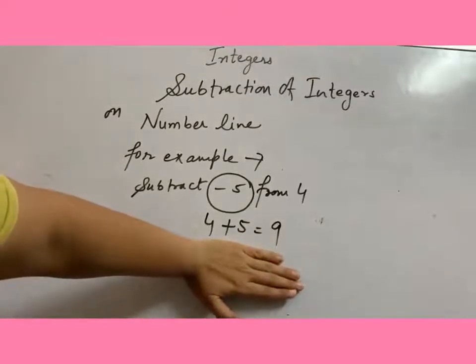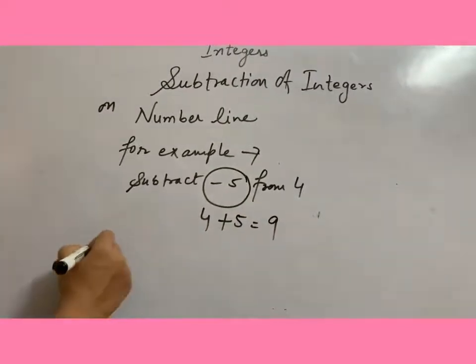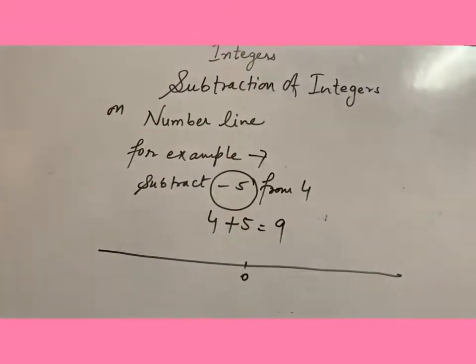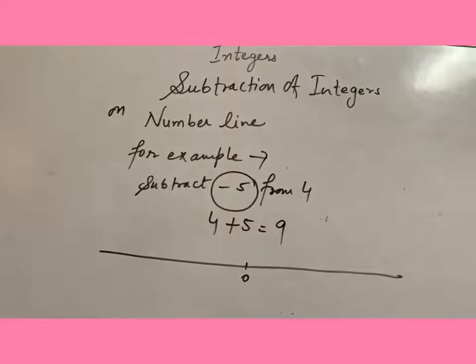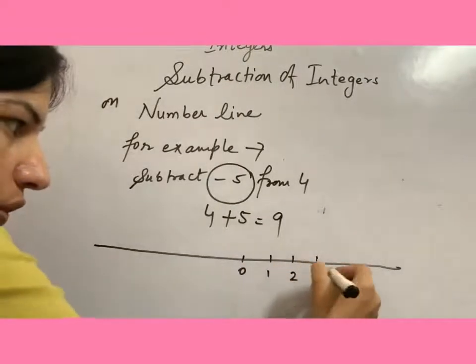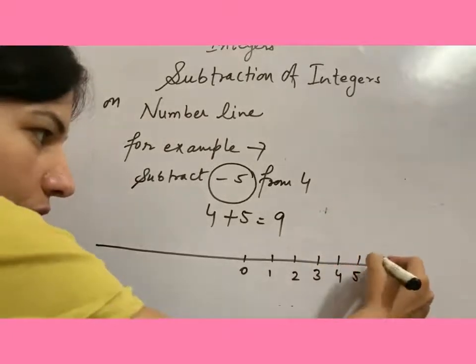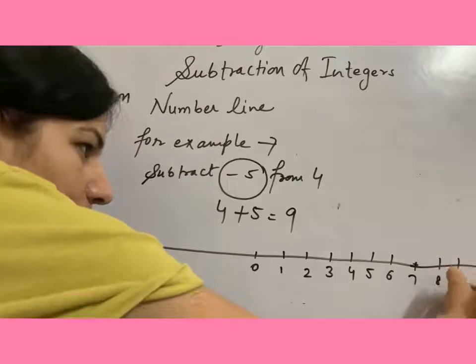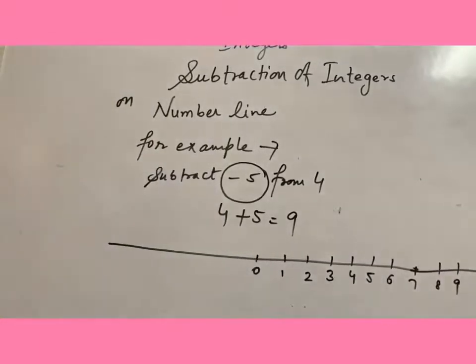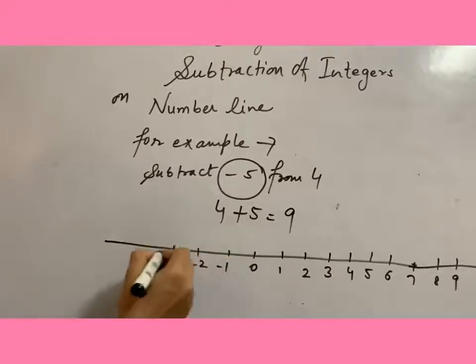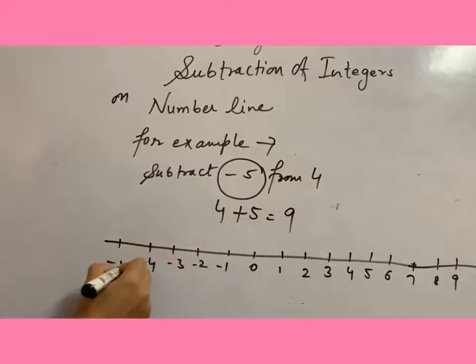Okay, so here I am drawing a number line. You have already knew how to draw number line. So 1, 2, 3, 4, 5, 6, 7, 8, and 9. And on the left side we have negative integers.